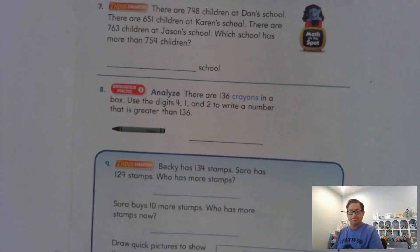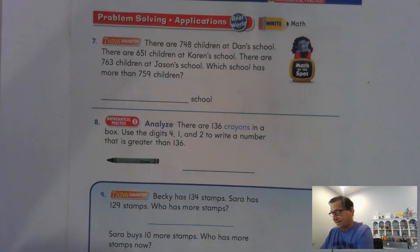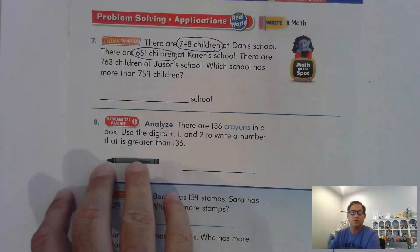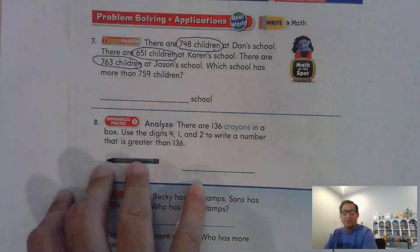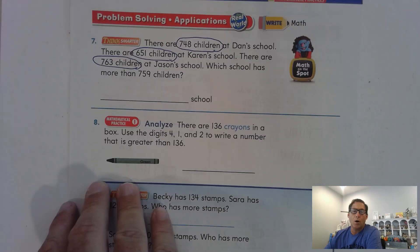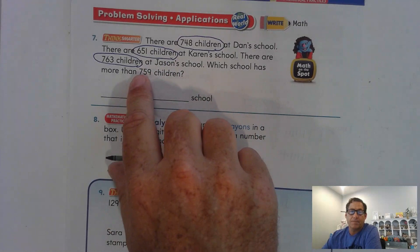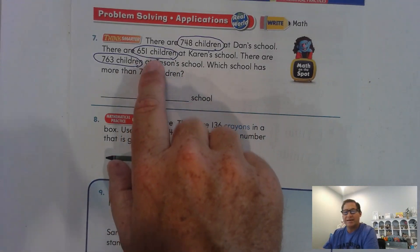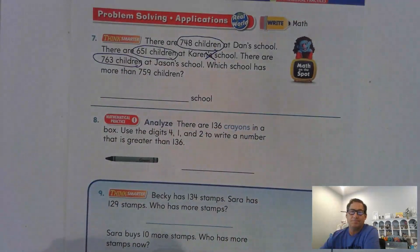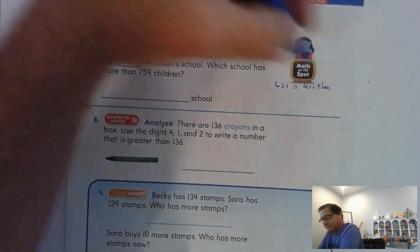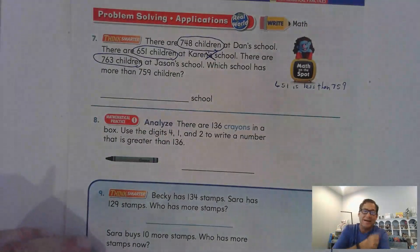Page 100. There are 748 children at Dan's school. There are 651 children at Karen's school. There are 763 children at Jason's school. Which school has more than 759 children? Which one has more than 759? So let's just start with the 700s. Well, 600 is less than 700. So it can't be Karen's school. Because 651 is less than 759. We want the one that has more.